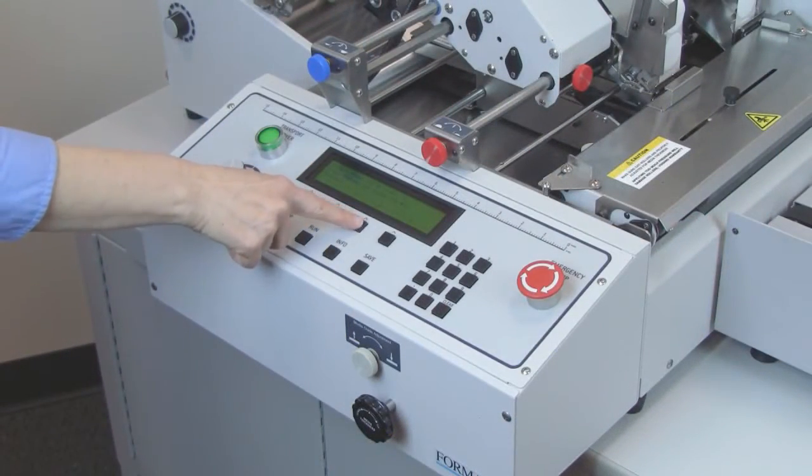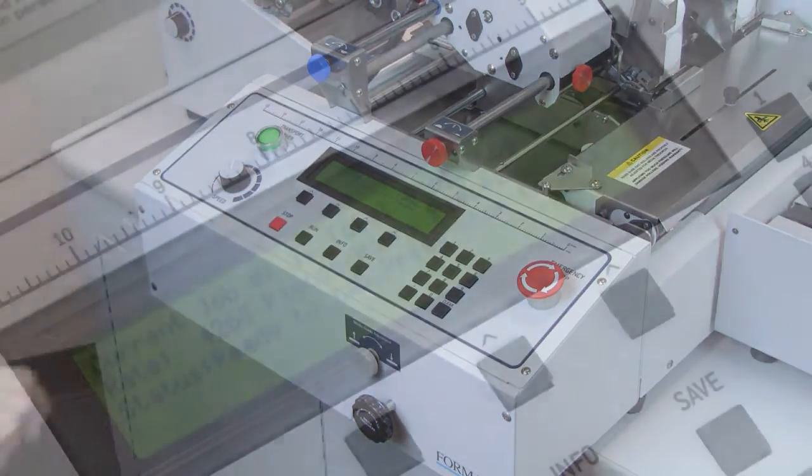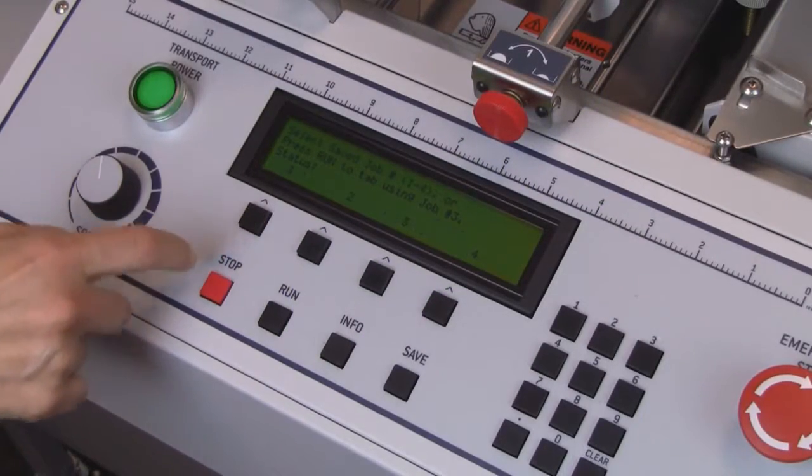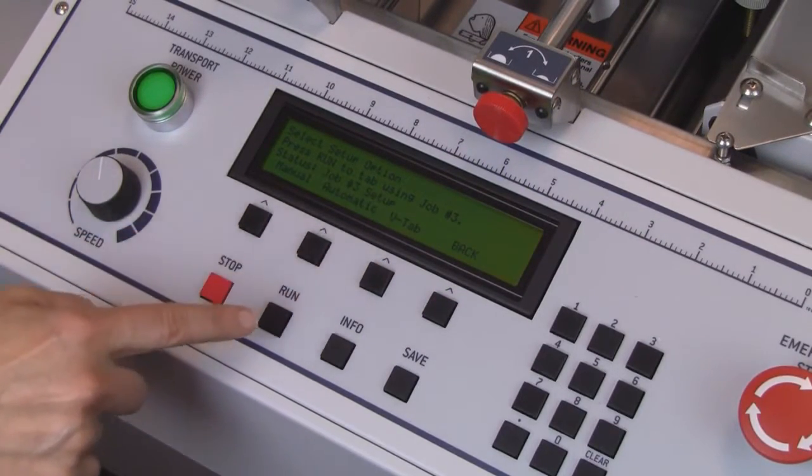The centralized control panel is easy to use, with an LCD digital display, lifetime and job resettable counters, and the ability to program up to four jobs in memory with different media sizes, tabs, and tabbing positions.